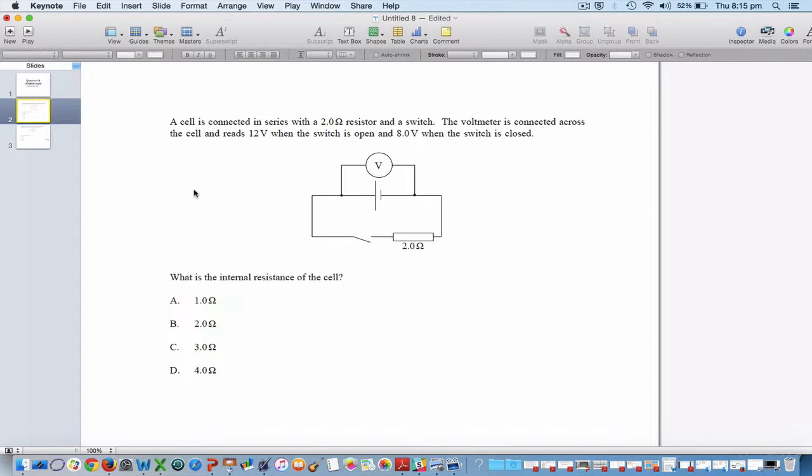So internal resistance of the cell means that there is a little resistor in here, or the cell itself has a certain resistance, and we need to figure out what that happens to be. So let's just simply ignore the fact that there is a hidden resistor in here at the moment, and concentrate on the fact that it says when the switch is closed, so when the circuit is complete, you've got 8 volts coming out of this battery and going through this here resistor.